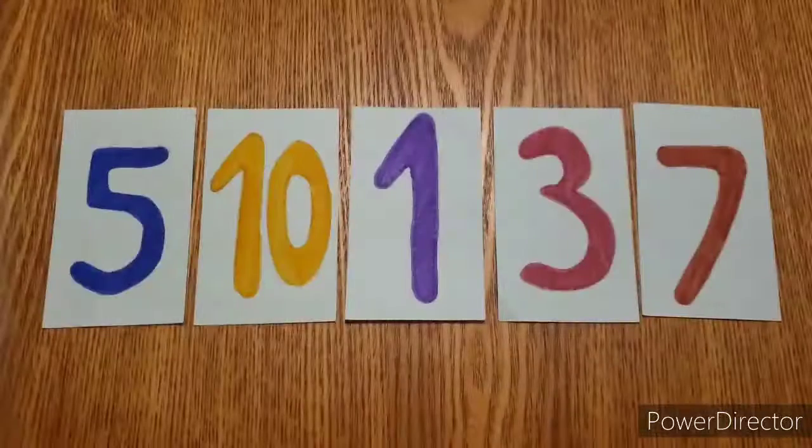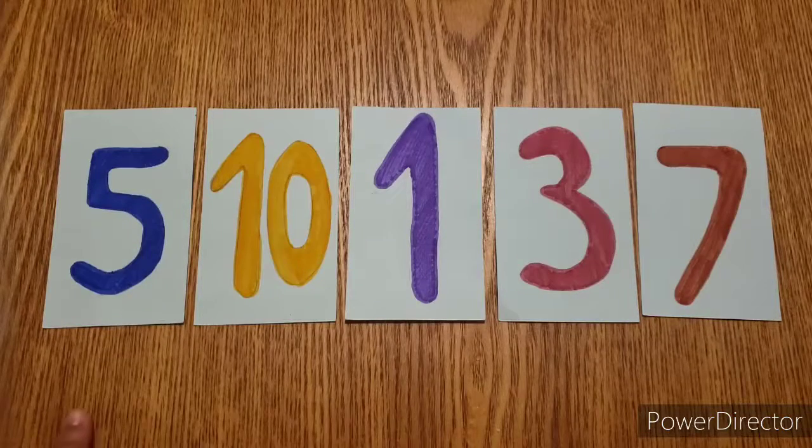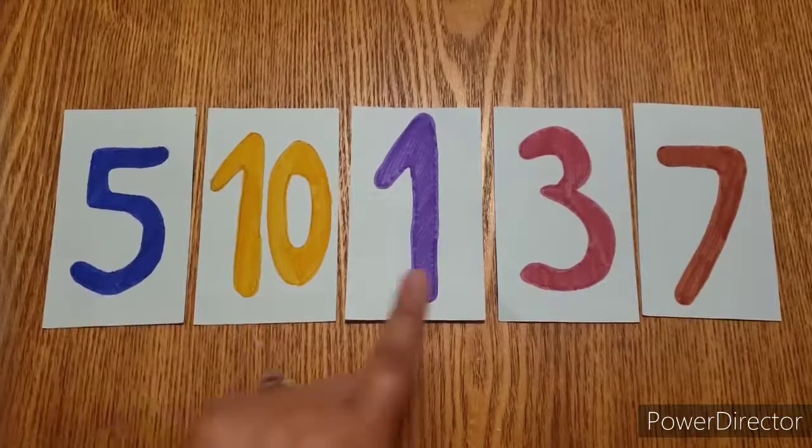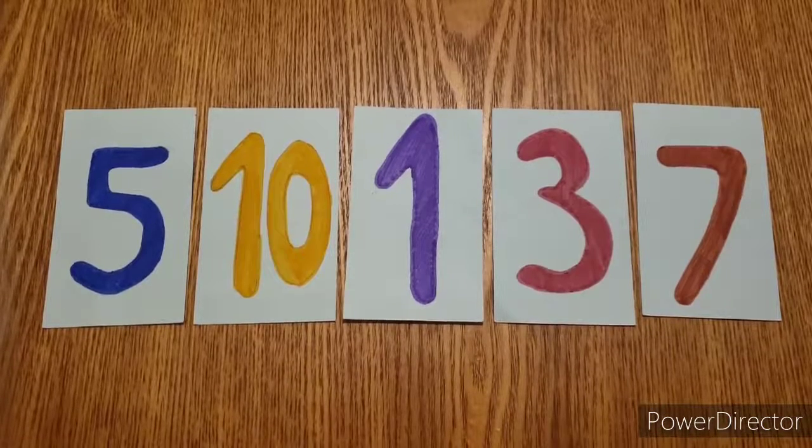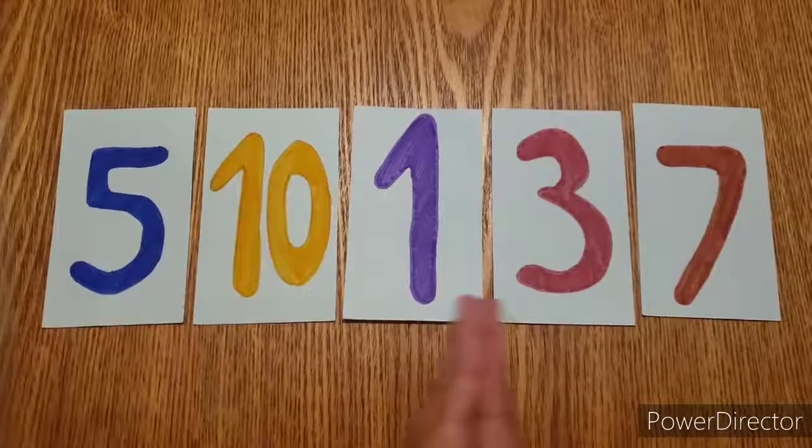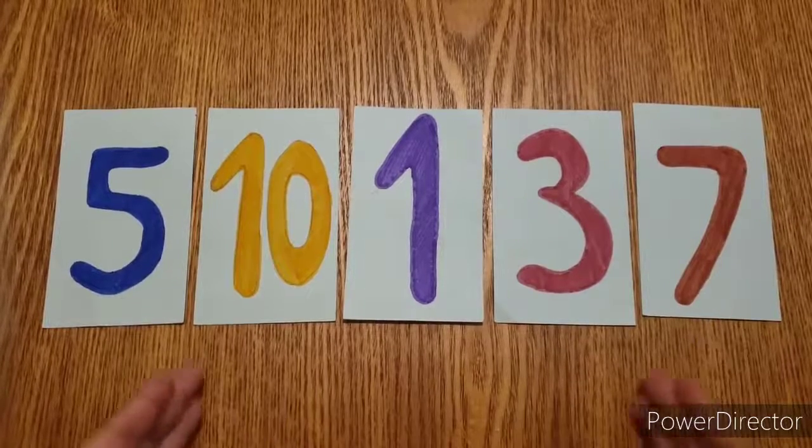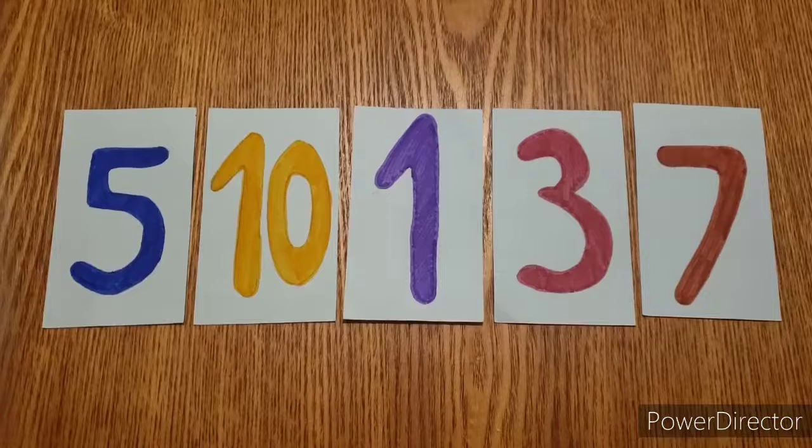Now let's take a look at these numbers. We have the number 5, the number 10, the number 1, the number 3, and the number 7. So we want to go from least to greatest. So looking at these numbers, which one is the least number?